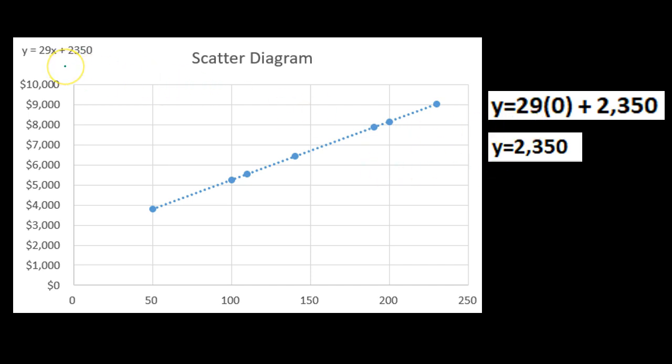So the formula for the line would be y equals 29x plus 2,350 in this case. Once we have the formula of the line, we can determine when this line will hit the vertical axis, and at that point that's going to be the fixed cost, because that will be at the point where we have zero units being produced but still have some cost—that cost must be the fixed portion of this type of expense.